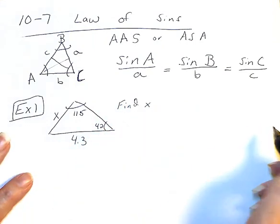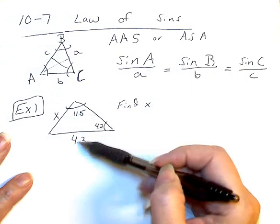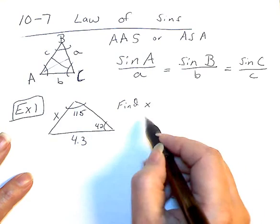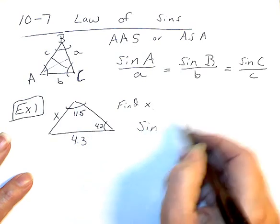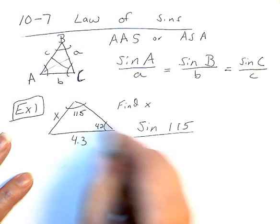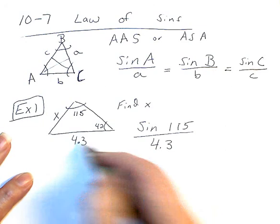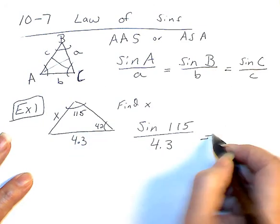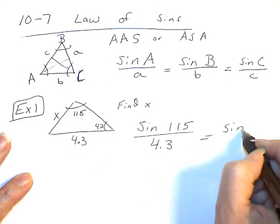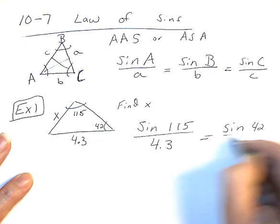So the first thing is, it doesn't matter if it's A, B, or C. All that matters is that they are crossed from each other. So we have sine of 115 over 4.3. Is equal to sine of 42 over X.